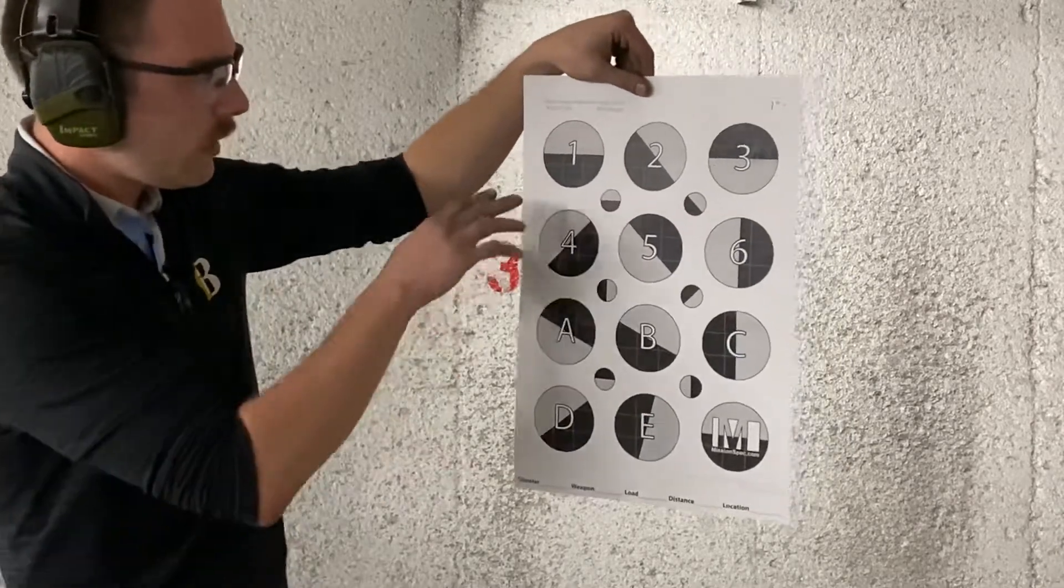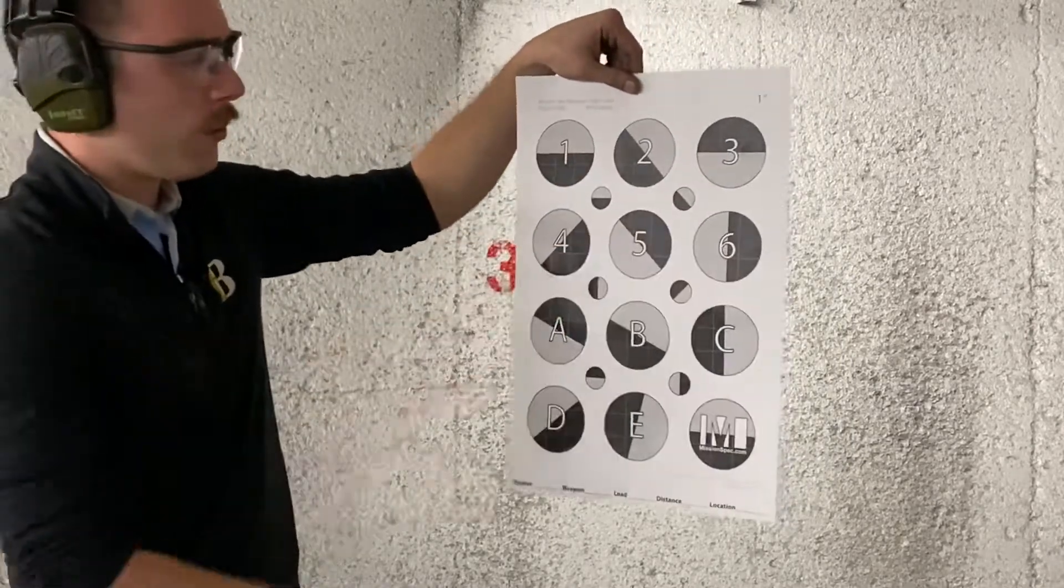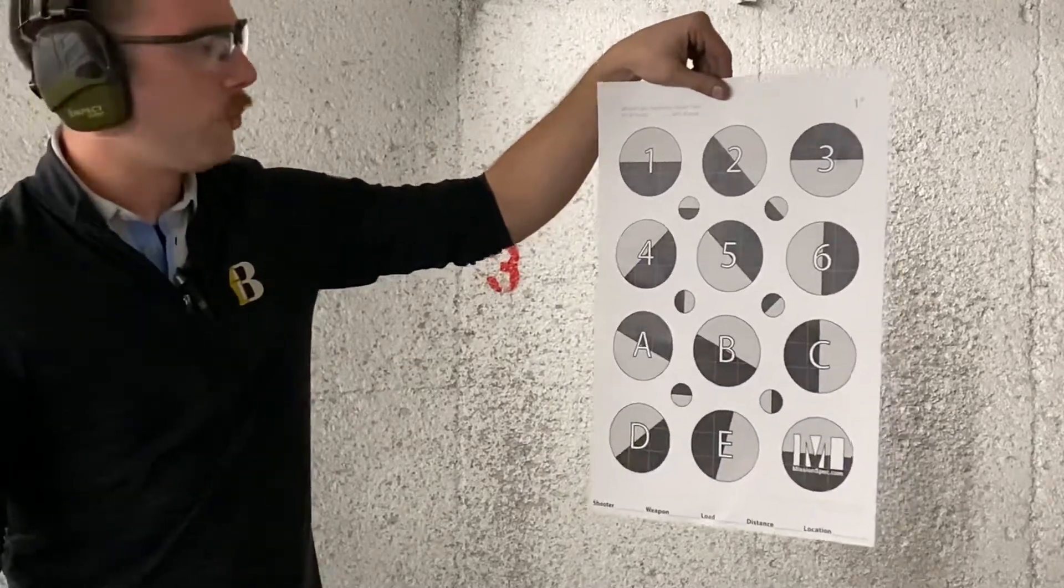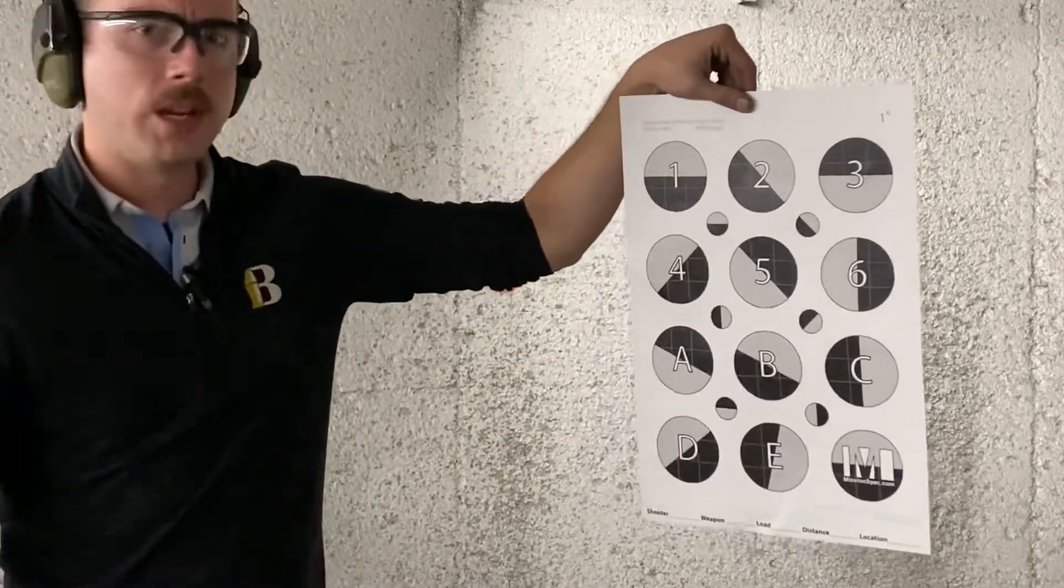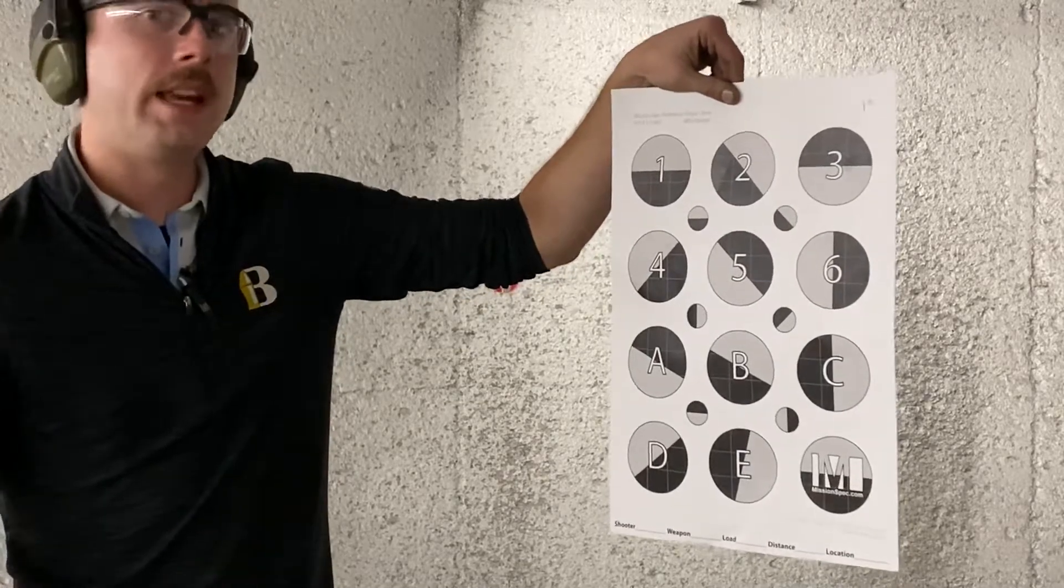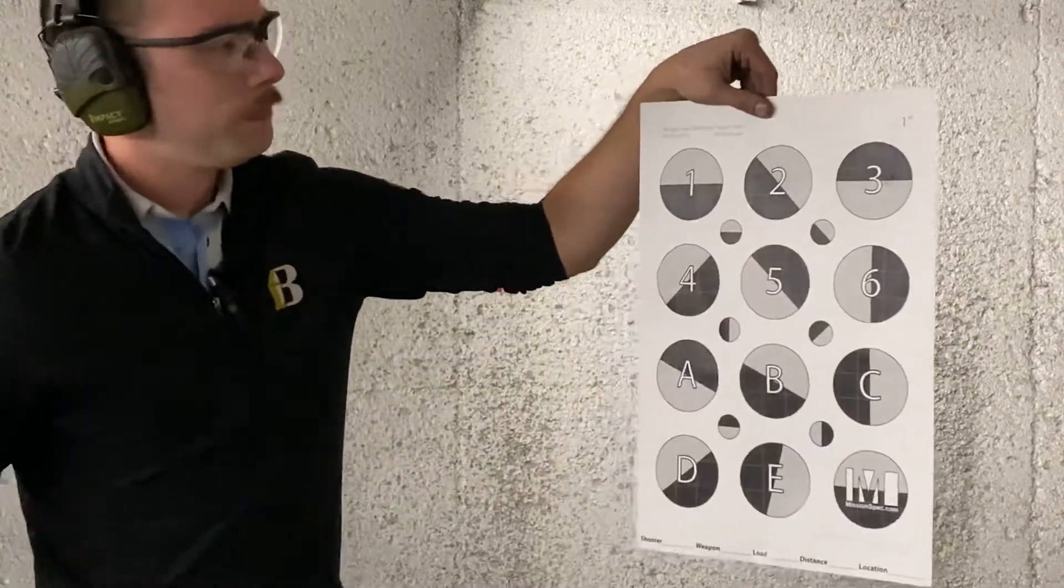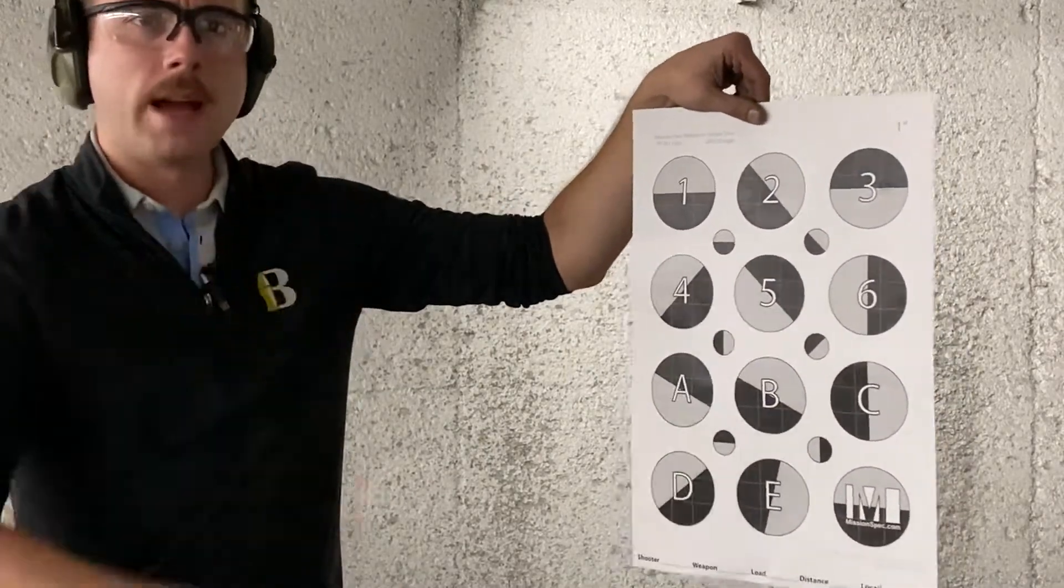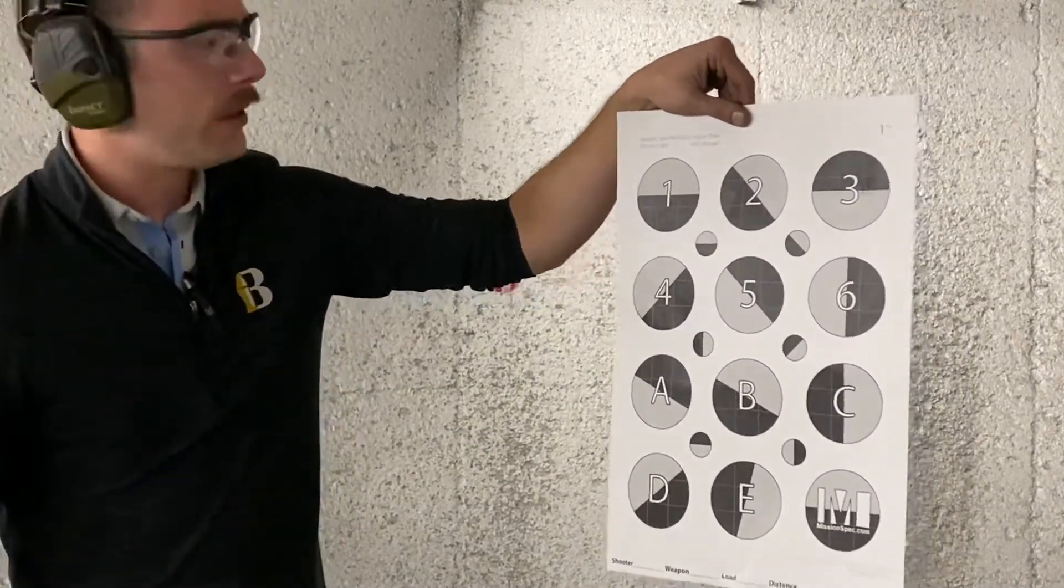With that, each circle in dot torture corresponds to a different portion of the drill. Circle one, for example, is draw and fire five rounds slow fire for the tightest group you possibly can. Circle two is draw and fire one round, rinse and repeat five different times.